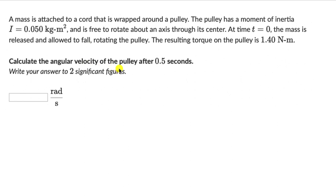The resulting torque on the pulley is 1.40 Newton meters. We need to figure out the angular velocity of the pulley after 0.5 seconds. For this one, let's try and draw what the situation is. Here we have a pulley, and we also have a mass.